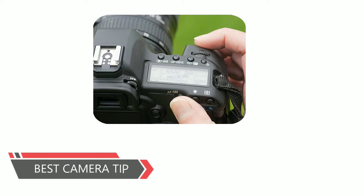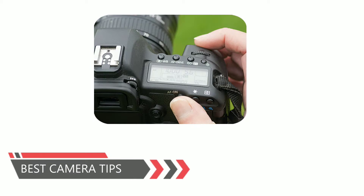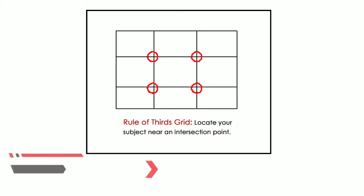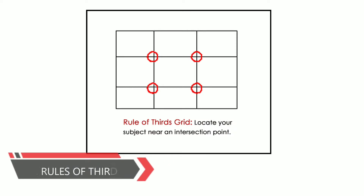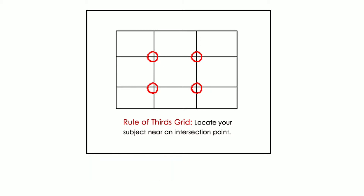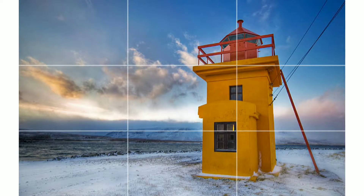Hi friends, today I'm going to tell you some of the best camera tips for the DSLR. Among those, the first one is the rule of thirds grid. As you can observe in the above figure, there are two horizontal lines and two vertical lines. The place where both horizontal and vertical lines meet are called intersection points.